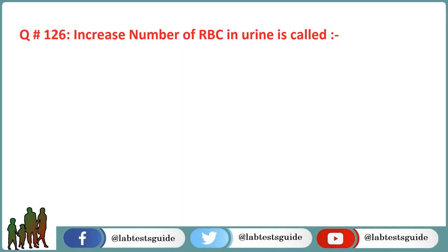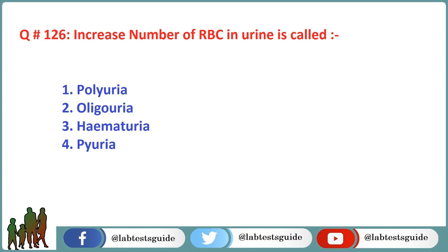Next question is 126: Increased number of RBCs in urine is called? Option 1: Polyuria. Option 2: Oliguria. Option 3: Hematuria. Option 4: Pyuria. The correct answer is Option 3: Hematuria.